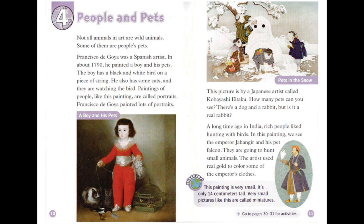Chapter 4: People and Pets. Not all animals in art are wild animals. Some of them are people's pets. Francisco de Goya was a Spanish artist. In about 1790, he painted a boy and his pets. The boy has a black and white bird on a piece of string. He also has some cats, and they are watching the bird. Paintings of people, like this painting, are called portraits. Francisco de Goya painted lots of portraits.